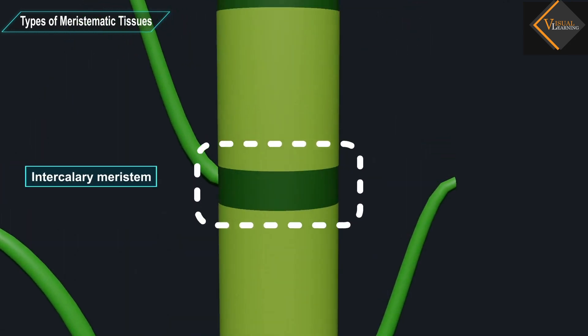Intercalary meristem is found at the internodes or at the base of the leaves. Intercalary meristem increases the height of the plant.